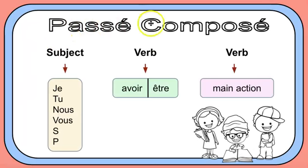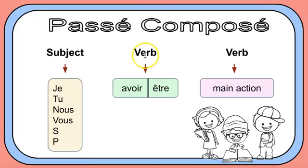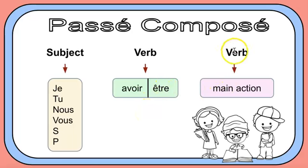Again, the passé composé has a subject and two parts to the verb. The first verb is the auxiliary, where you choose either avoir or être and conjugate in the present. And then you have the past participle, the main action. I hope this helps.